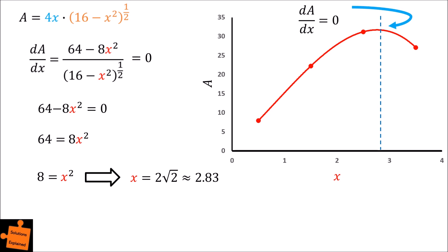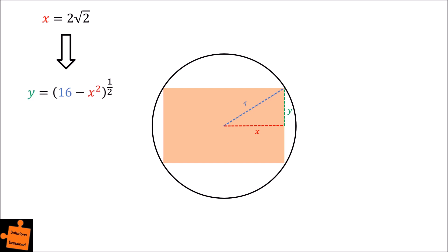If we now take a look back at the circle and rectangle logo, we can conclude our problem. So we know that x is equal to 2 root 2. Recall that from the equation of the circle, we can write y as equal to the square root of 16 minus x squared.